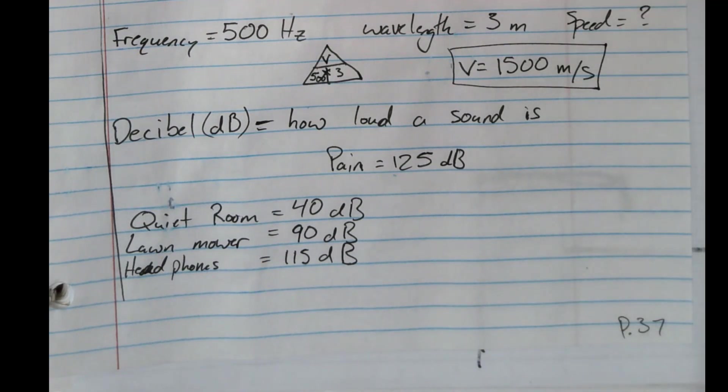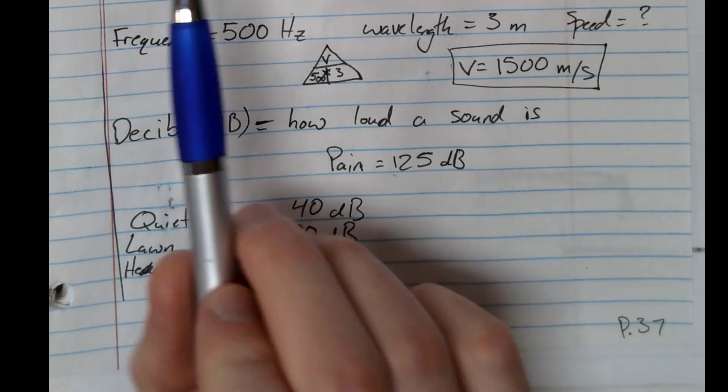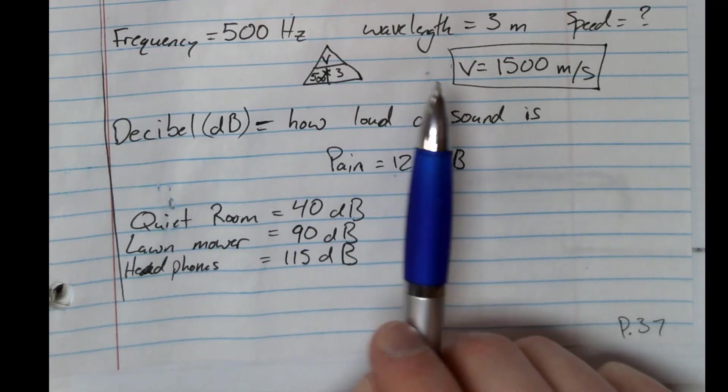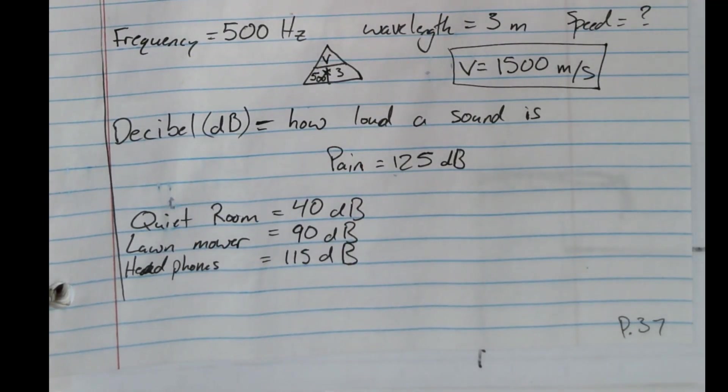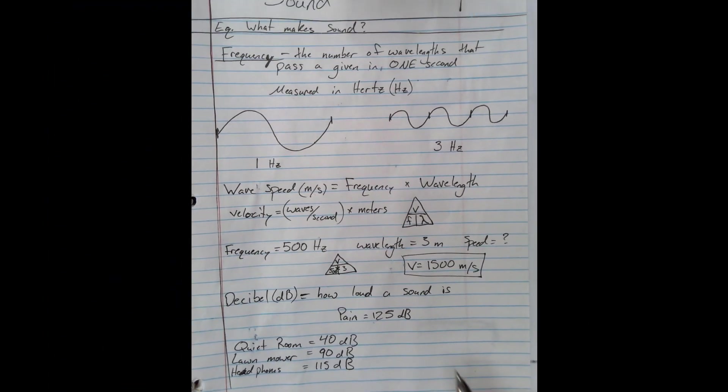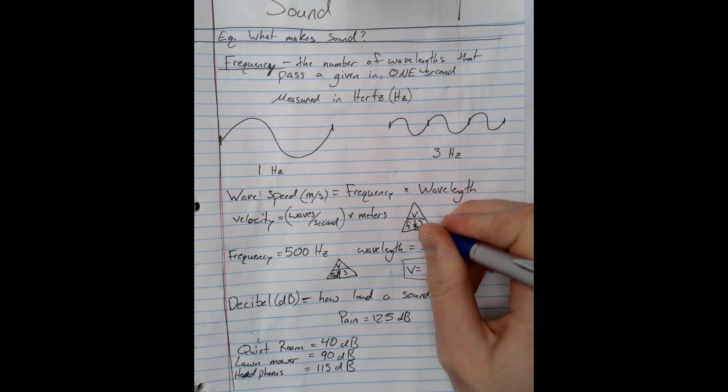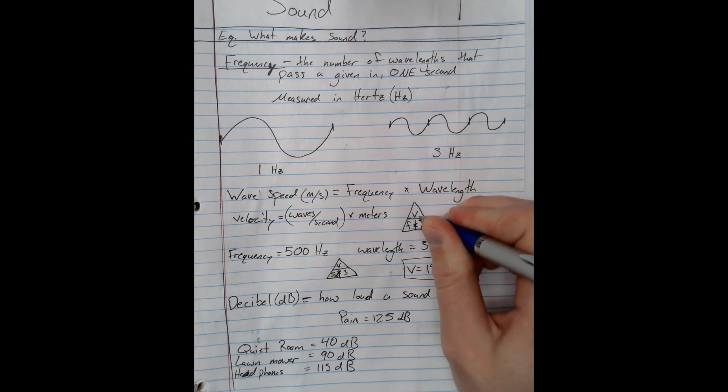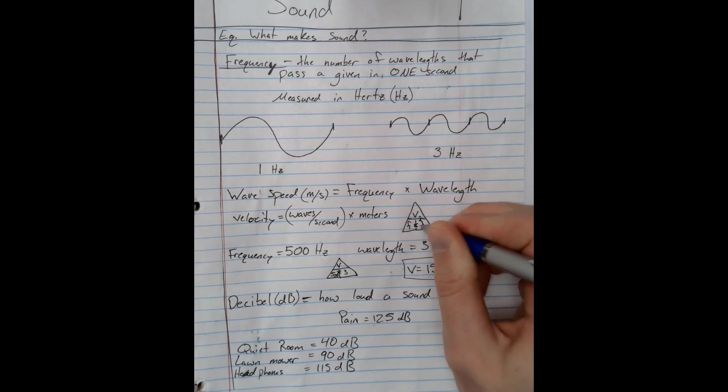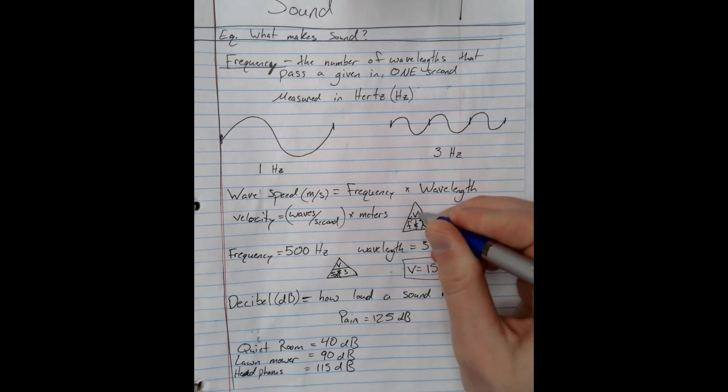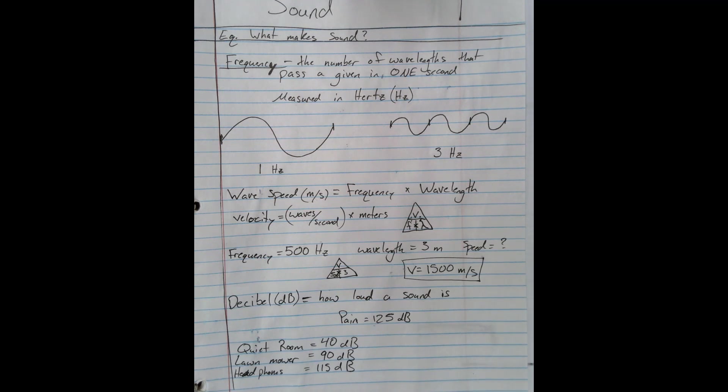Anyway, so this is our notes on sound. We're going to definitely do some more work with these problems for wave speed, frequency, and wavelength, and using this magic triangle. So keep that in mind. Remember from our last magic triangles, if they're next to each other you multiply, and if they're above each other you divide. Alright, see you guys.